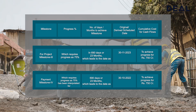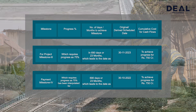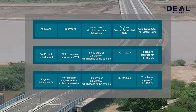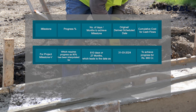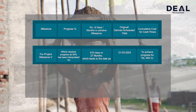Payment Milestone 4 requires the same 75% physical progress as Project Milestone 3 and correspondingly leads to 30th November 2023 to achieve progress worth Rs. 750 crore. Payment Milestone 5 requires 90% physical progress and has been interpolated for 810 days or 27 months, leading to approximately March 2024 to achieve progress worth Rs. 900 crore.